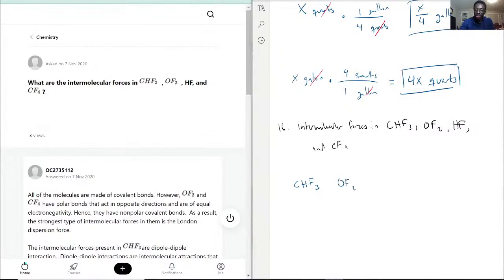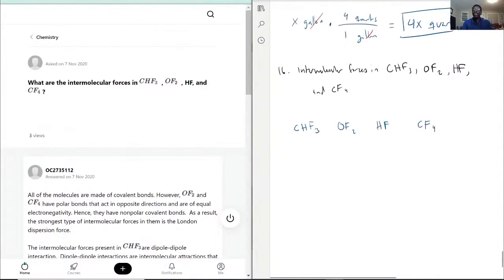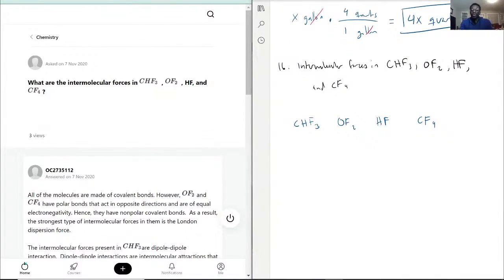CHF3, OF2, HF, and CF4. The first intermolecular force that's always present in everything is London Dispersion Force. That would be all of them.